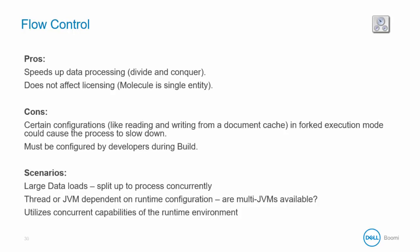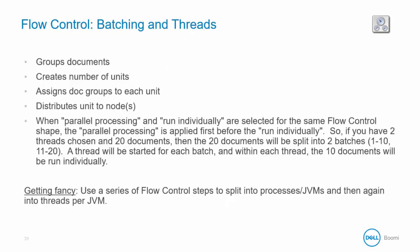It's good practice to use the flow control shape to take advantage of your runtime's capabilities — so long as you have the available memory, use it. In the flow control shape you can group documents, create a number of units, assign document groups to each unit, and distribute units to nodes. If you enable both parallel processing and run individually, parallel processing is applied first. So with 2 threads and 20 documents, the 20 documents split into 2 batches of 10, and within each thread the 10 documents run individually. You can also use a series of flow control steps to first split into process JVMs and then again into threads per JVM.